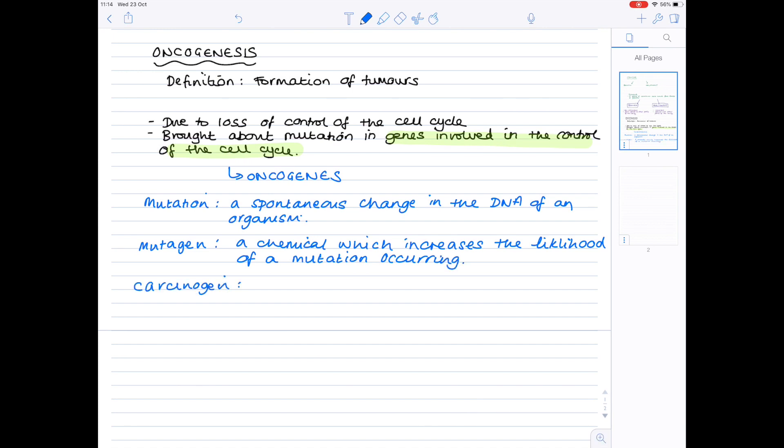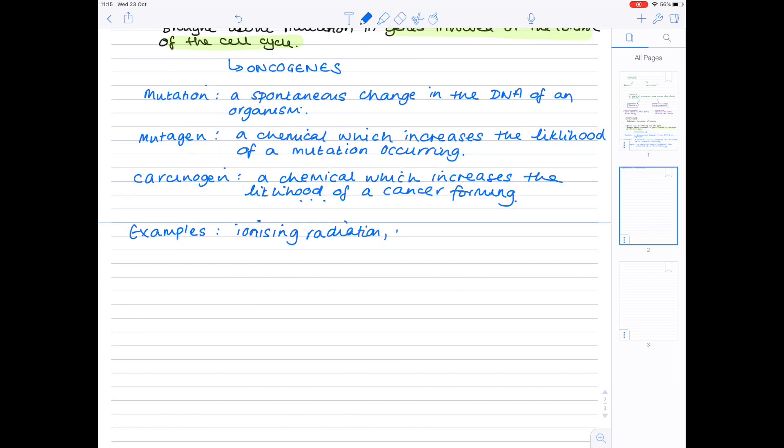A carcinogen is a chemical which increases the likelihood of a cancer forming. Examples of both mutagens and carcinogens include ionizing radiation, UV light, and X-rays.